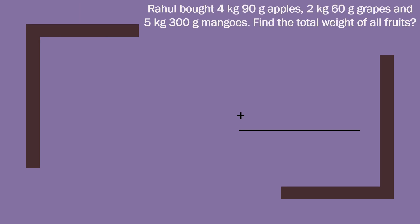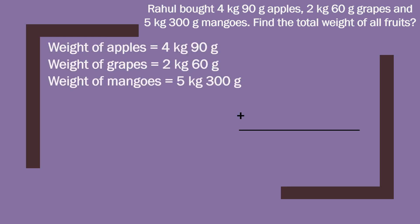We will first write the statements — weight of apples, weight of grapes, weight of mangoes. Then we will make two columns: kilogram and gram. We will write 4 kilogram 90 gram for apples, 2 kilogram 60 gram for grapes, and 5 kilogram 300 gram for mangoes. Now we will add all.